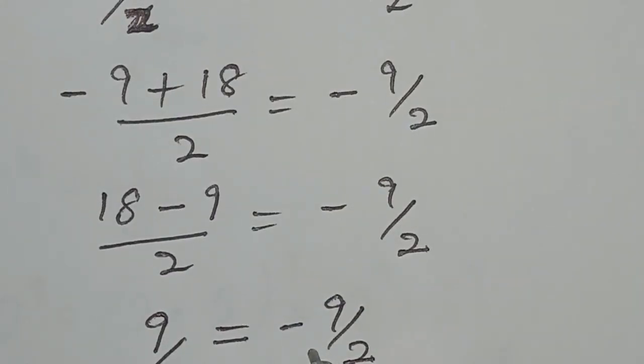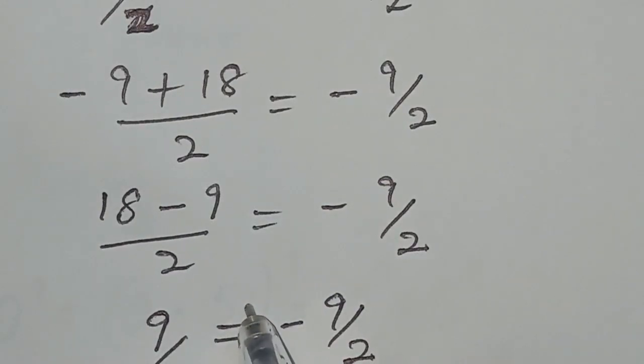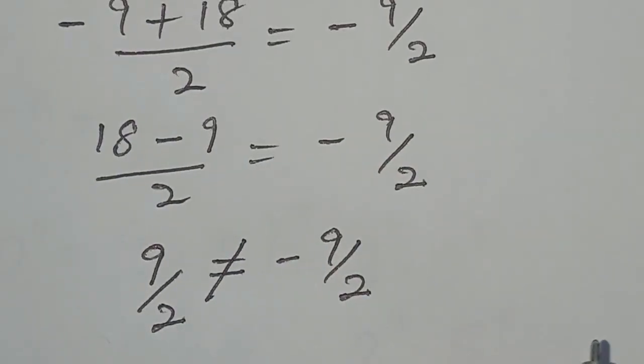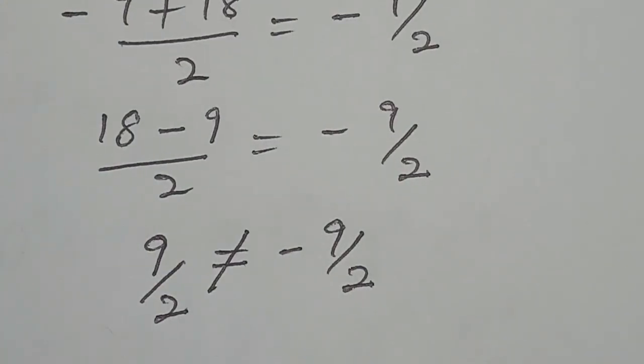which contradicts each other. So this implies that 9 over 2 is not equal to minus 9 over 2. So it is extraneous.